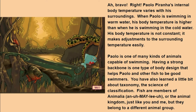Who remembers another way scientists classify animals? I'll give you a hint — it has to do with bones. Is it that some animals have backbones and some animals do not have backbones? You are right. Animals with backbones are called vertebrates, and those without backbones are called invertebrates. Paolo is one of many kinds of animals capable of swimming. Having a strong backbone is one type of body design that helps Paolo and other fish to be good swimmers.